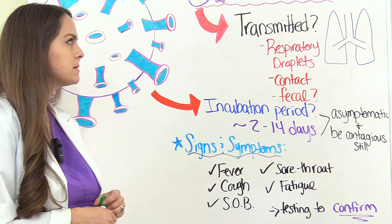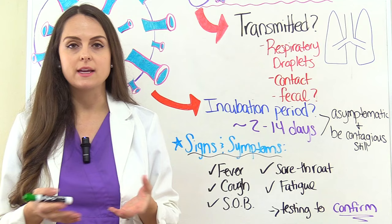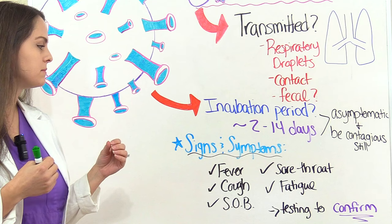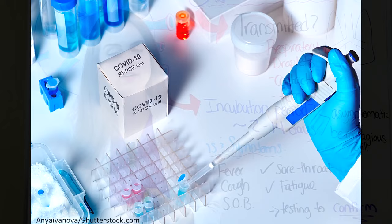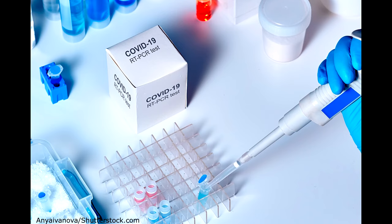What are the signs and symptoms? They are related to the respiratory system: fever, cough, shortness of breath, sore throat, and fatigue — similar to the flu. The only way to confirm COVID-19 is through a test. It's called a real-time PCR test, which detects the genetic material of the specific virus we're looking for in COVID-19.